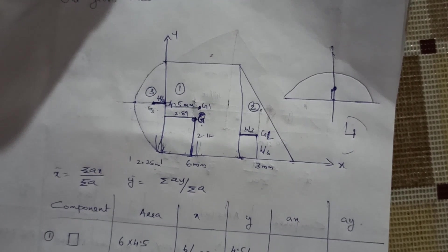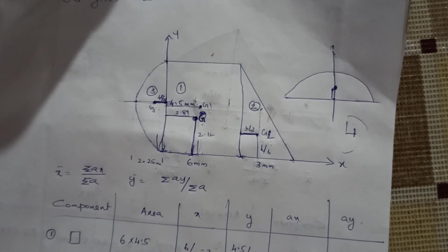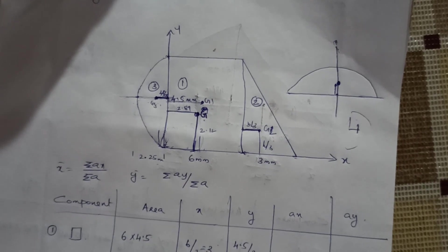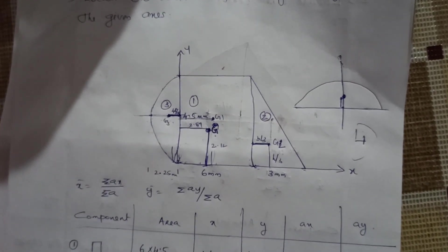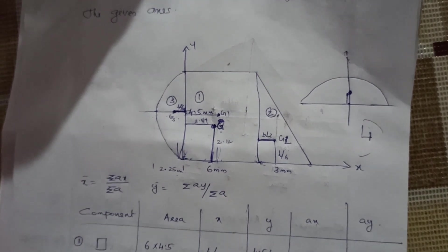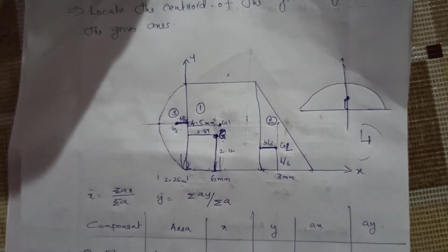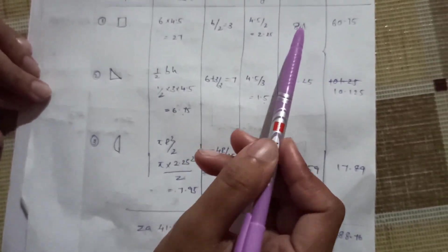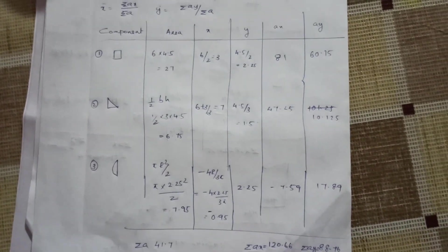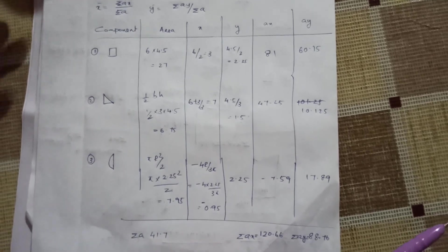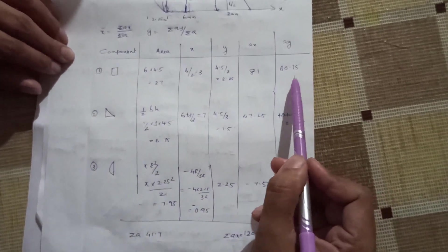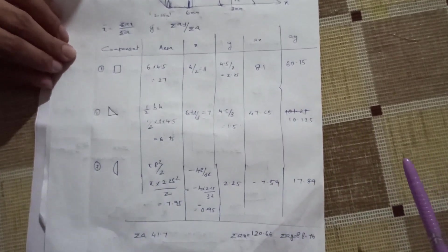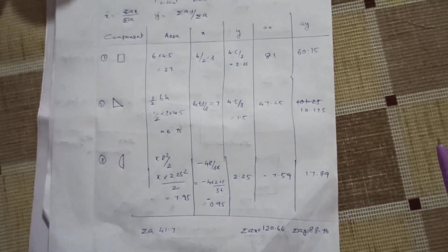If you want to verify the answer, you can check it with a calculator. In the figure, there is a mark distribution for one mark each. If you mark the values correctly — such as the area A81 — you can verify the result. Thank you.